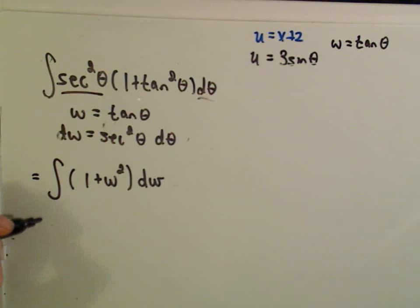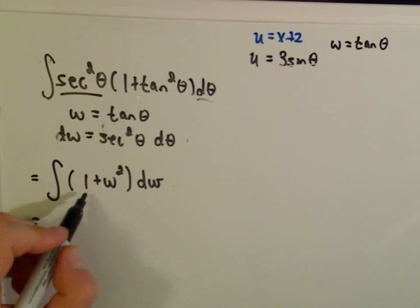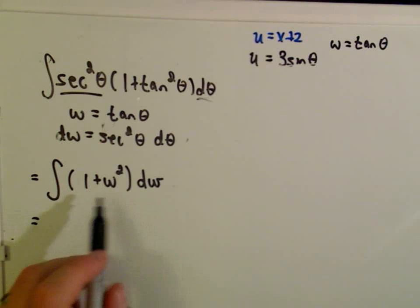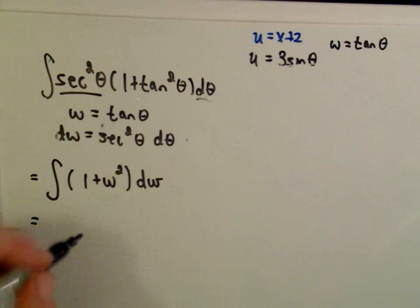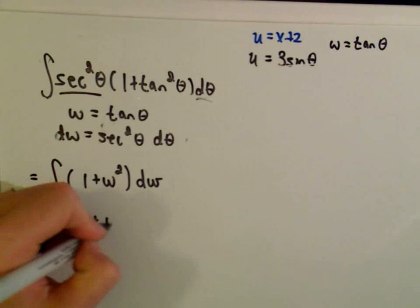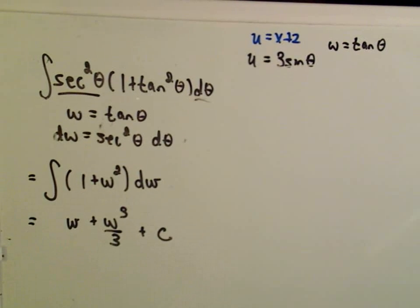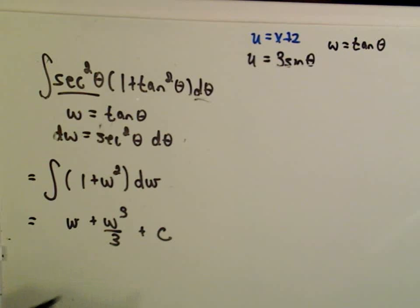Here I'm just going to finish out the rest of this trigonometric substitution problem that has been very long. We're at the point where we have to integrate 1 plus w squared. If we integrate, we'll just get w plus w to the third over 3 plus c. And now we just have to start backtracking — our original problem dealt with x's, so we're going to have to get back to x's.